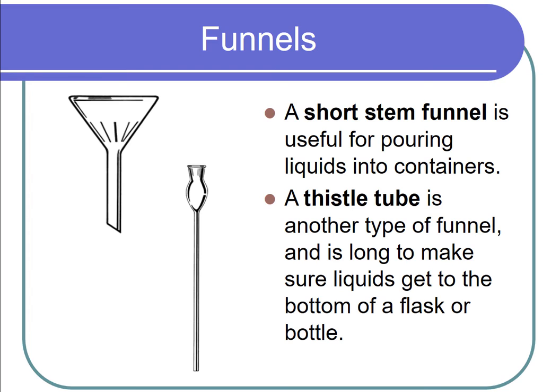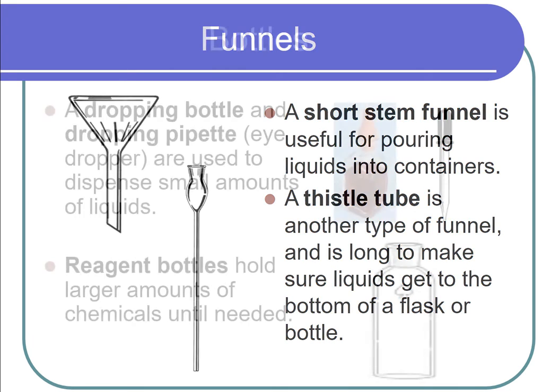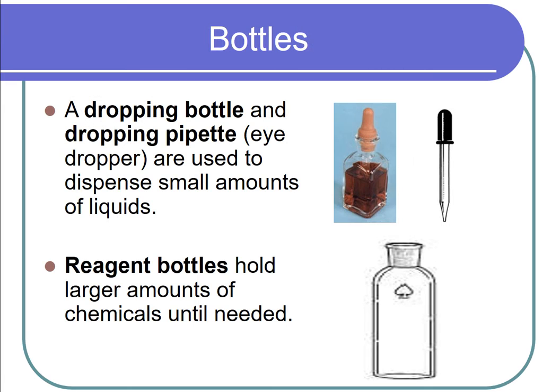A short-stem funnel is used for pouring liquids into containers. A thistle tube is another type of funnel and is long to make sure liquids get to the bottom of a flask or bottle.